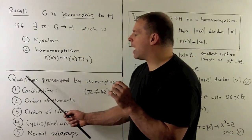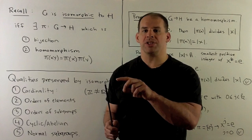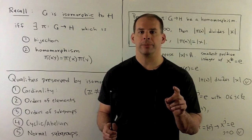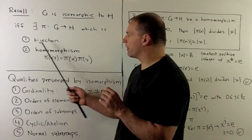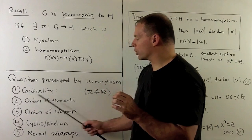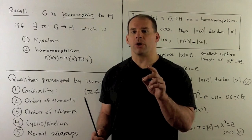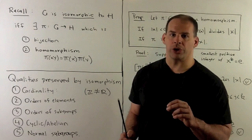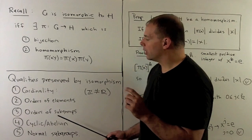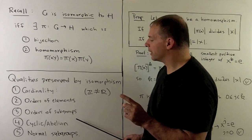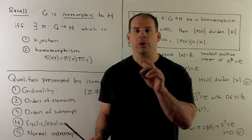We'll have a list of qualities preserved by isomorphism. So if I want to show that two groups are not isomorphic, we'll just show that the qualities on one side don't line up with the qualities on the other. Some of these qualities: first we have cardinality, which will be preserved because we have a bijection. Then we have orders of elements, orders of subgroups, the quality of cyclic or abelian, and we also have normal subgroups. We'll show two and four, and the others we'll just note in examples.